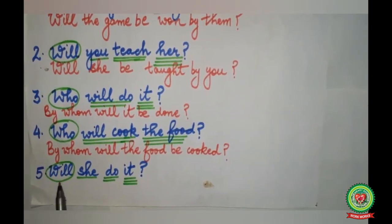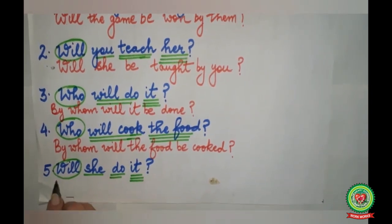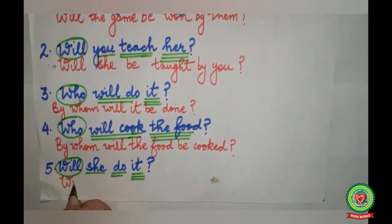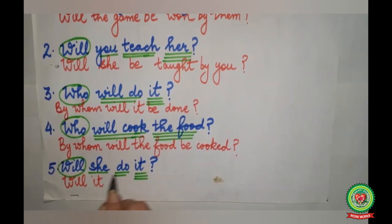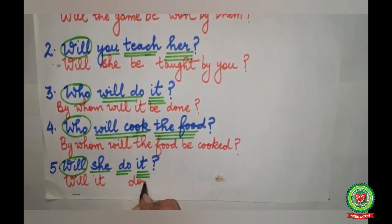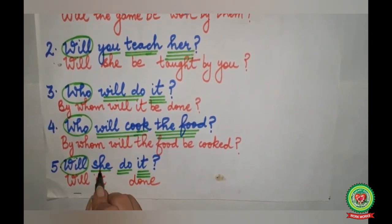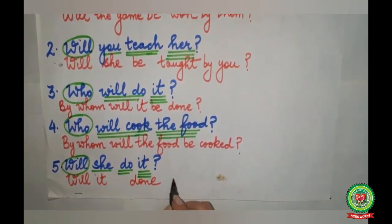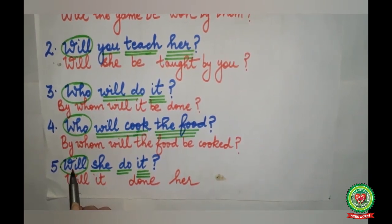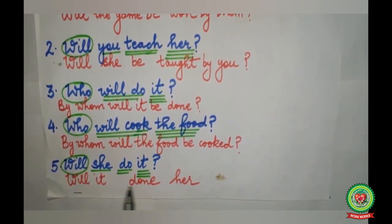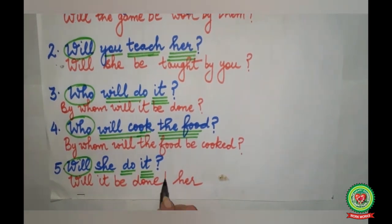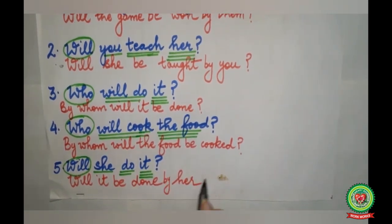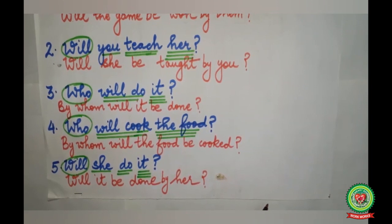The last example: 'Will she do it?' 'She' will go to the end and become 'her'. 'Will' remains. 'It' will come to the beginning. We add 'be' before 'done'. Passive: 'Will it be done by her?' with a question mark at the end.